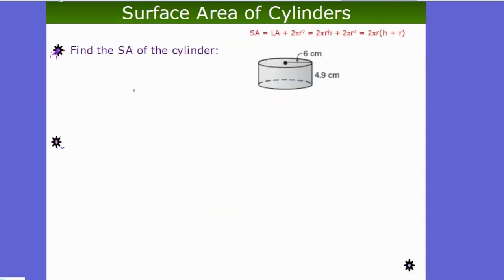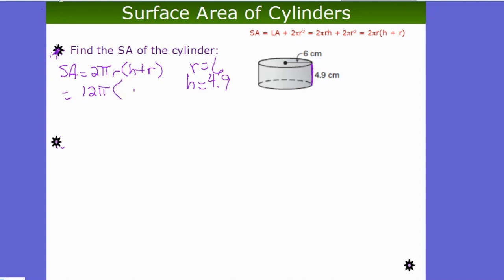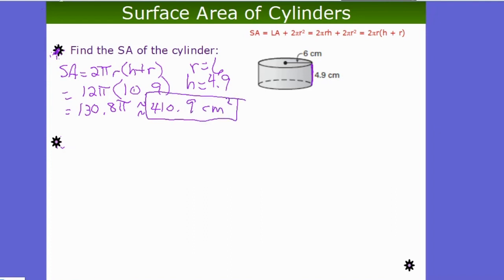Example: find the surface area of a cylinder with r = 6 cm and H = 4.9 cm. SA = 2πr(H + r) = 2π(6)(4.9 + 6) = 12π × 10.9 = 130.8π. That is the exact surface area. Multiplying out: SA ≈ 410.9 square centimeters. Use your calculator to plug in the formula and get this result.